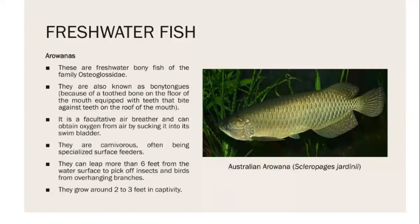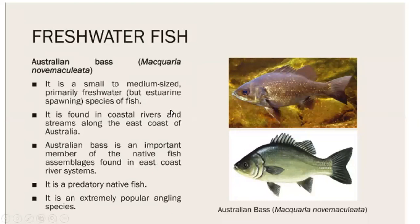The Arowana is also a freshwater fish and a facultative air breather. It is a carnivore and can reach 6 feet in length, though in captivity it typically grows only 2 to 3 feet. It is notable for having a tooth bone on the floor of the mouth equipped with teeth that bite against teeth on the roof of the mouth.